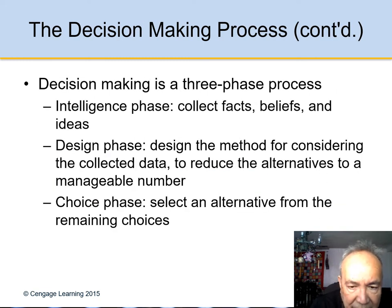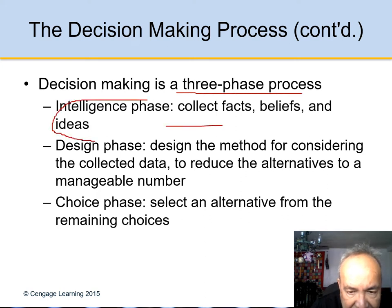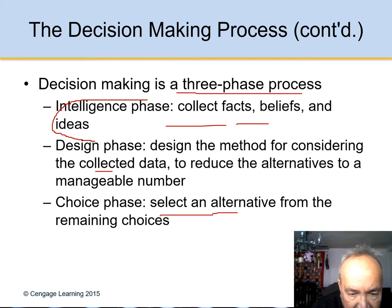Decision making can involve three processes. First, intelligence: collect facts, beliefs, and ideas. Second, design: consider what you will do with the collected data to reduce alternatives to a manageable number. Third, choice: select one alternative from the remaining choices.